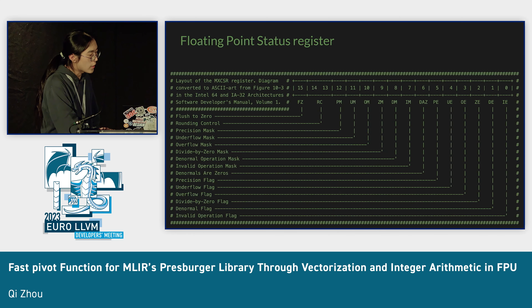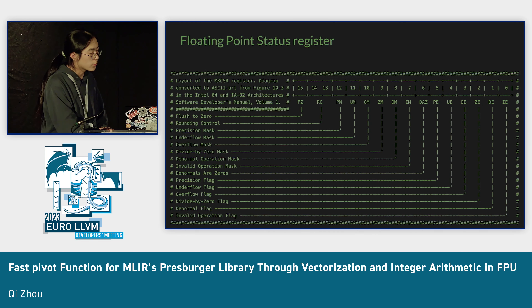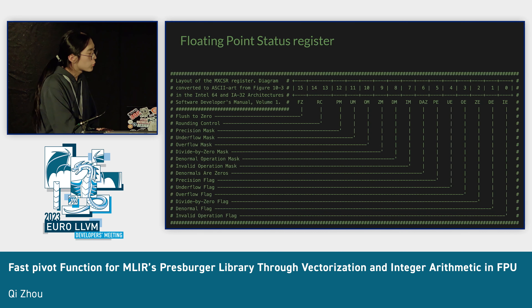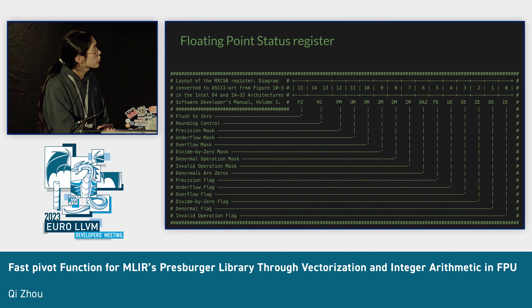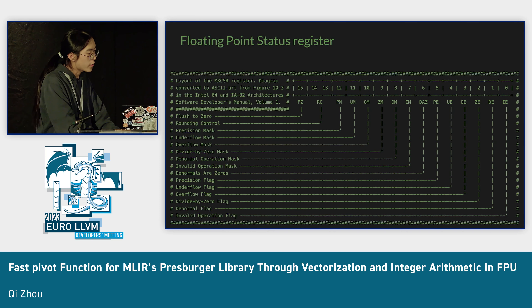This is the structure of the MXCSR register. It provides a precision flag and an overflow flag to indicate whether previous instructions have produced an overflow result or not. The biggest benefit of doing integer arithmetic in floating point is that we have this status register — an equivalent status register does not exist for vectorized integer operations in x86 microarchitecture.